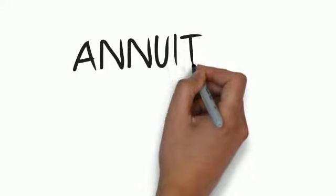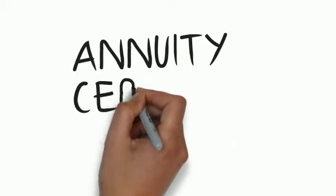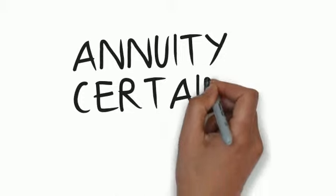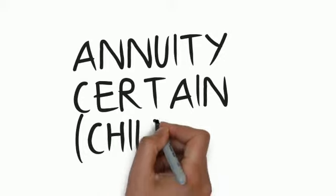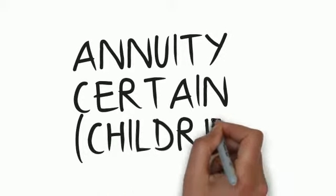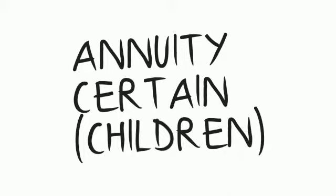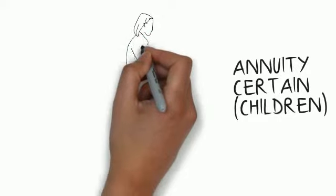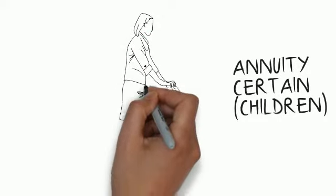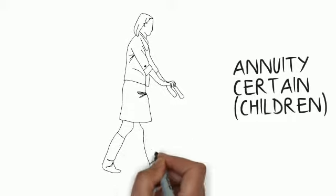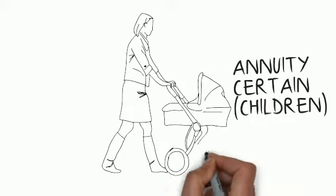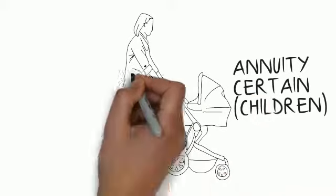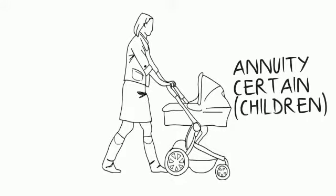Looking at an annuity certain, this is a very specific type of annuity. It is paid for a fixed term — 10 years, 5 years, 8 years, 15 years, whatever number of years you want. It is paid for the period of the term. So if you take a 10-year term annuity contract, then it will pay for 10 years without fail. Similarly, for 20 years, it will pay for 20 years without fail.